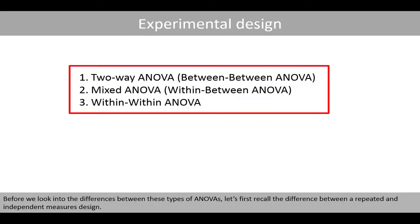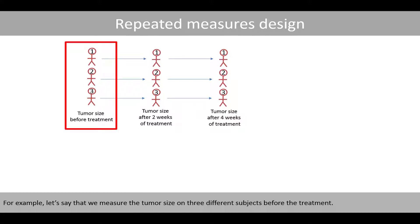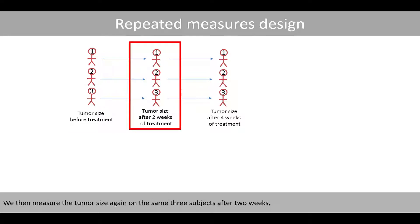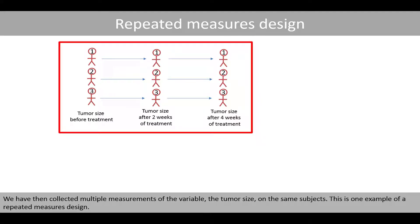Before we look into the differences between these types of ANOVAs, let's first recall the difference between a repeated and an independent measures design. A repeated measures design involves multiple measurements of the same variable on the same or matched individuals. For example, we measure the tumor size on three different subjects before treatment, then again after two weeks, and then again after four weeks. This is one example of a repeated measures design.